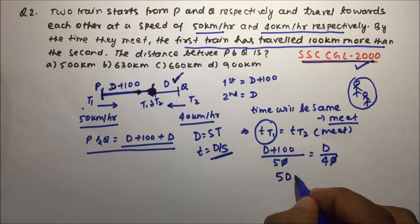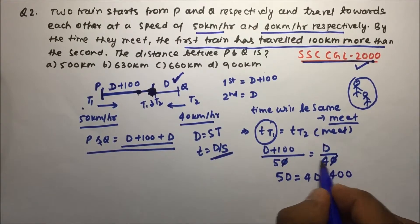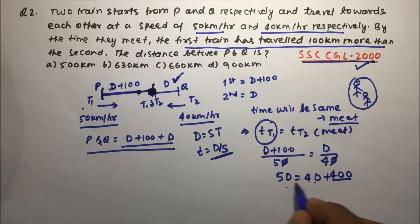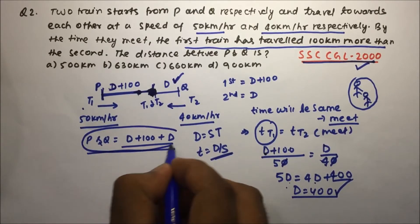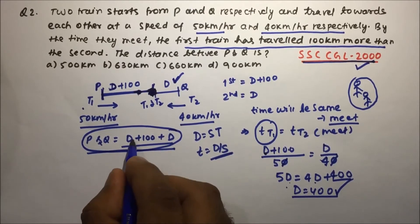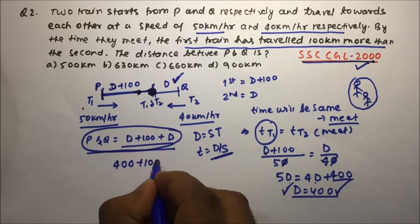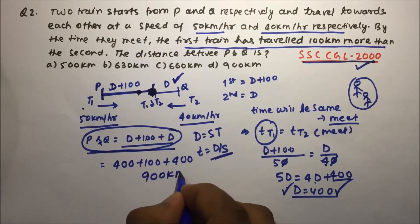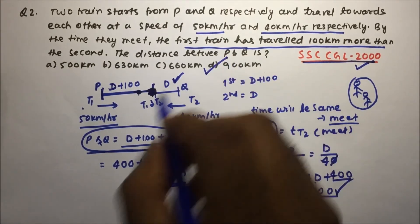Cross-multiplying: 40(D + 100) = 50D, so 40D + 4000 = 50D, giving 10D = 4000, therefore D = 400 km. The total distance between P and Q is (400 + 100) + 400 = 900 km, which is option D.